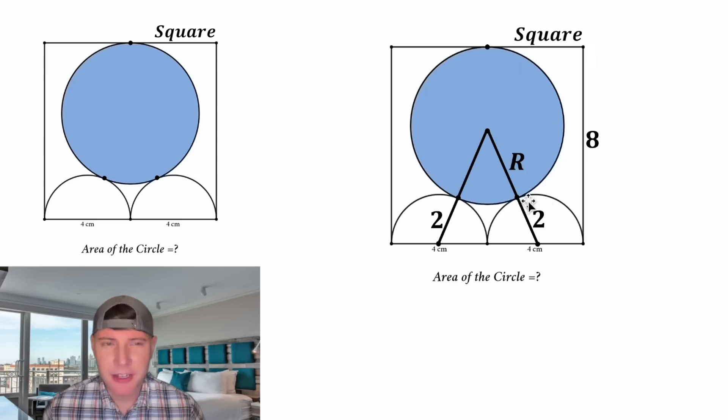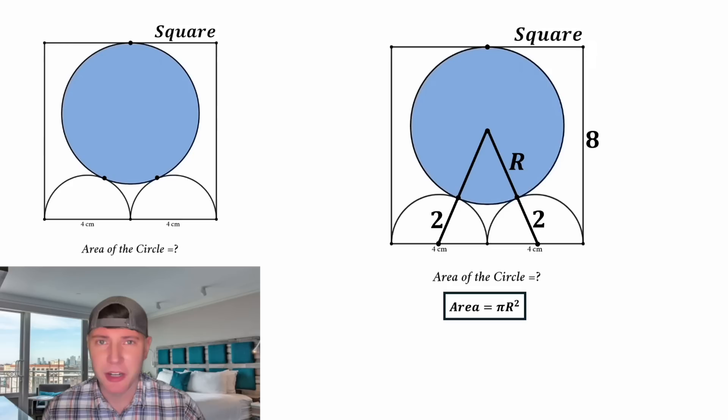And let's clean this up. And now let's write a formula for what we're trying to solve. Since we know the radius of the blue circle is big R, we can say the area is equal to π big R squared. This is what we're trying to solve. Let's put a box around it. So now we got to try to figure out the length of big R.